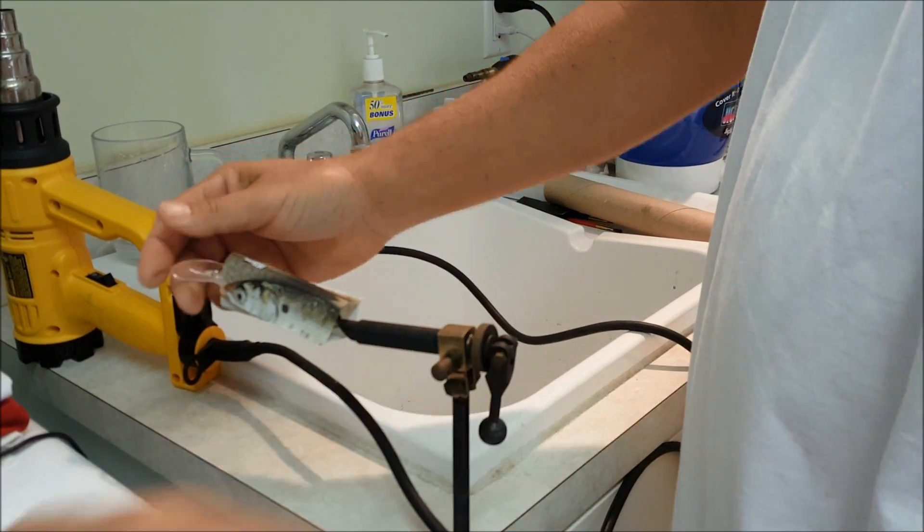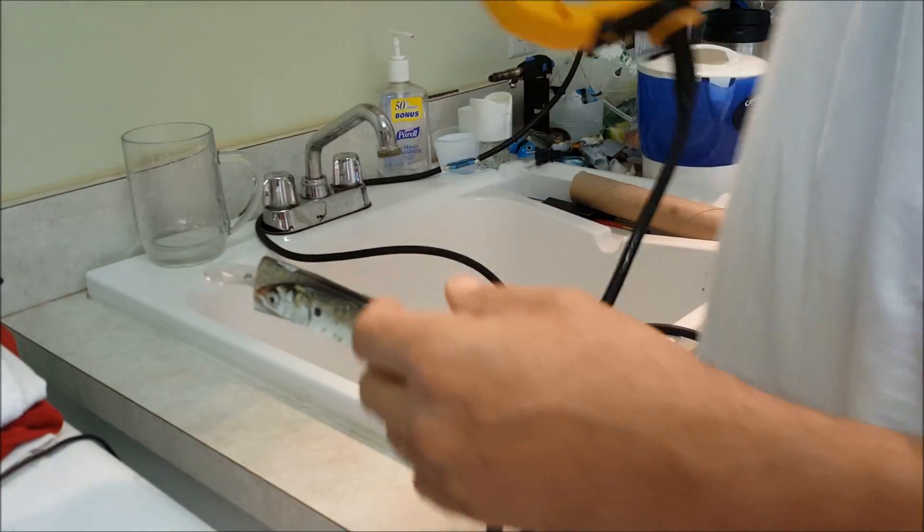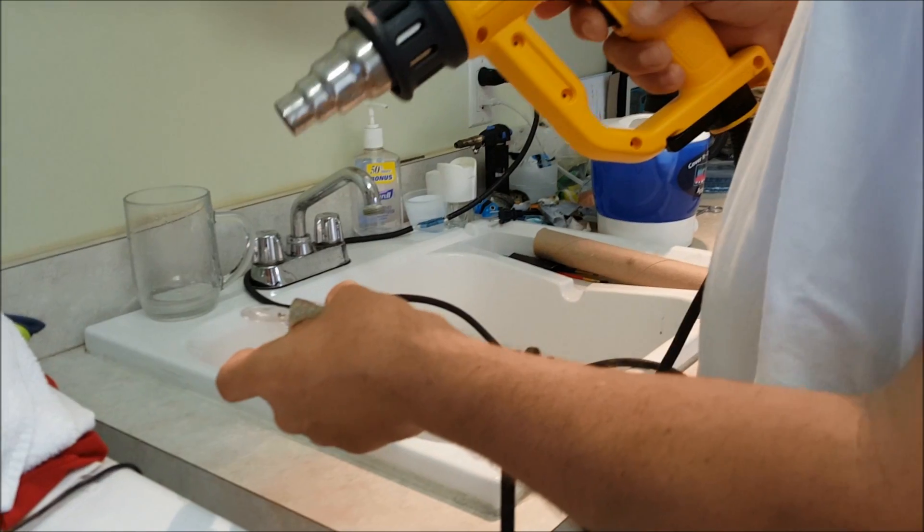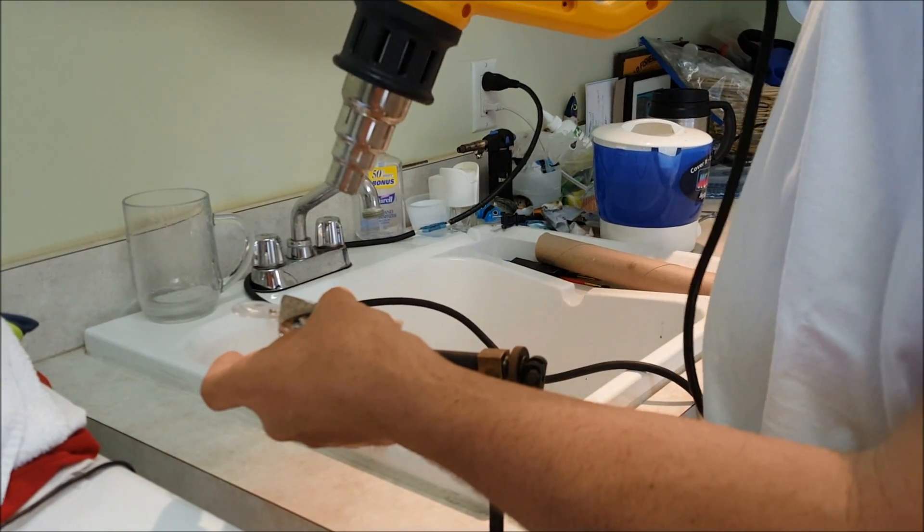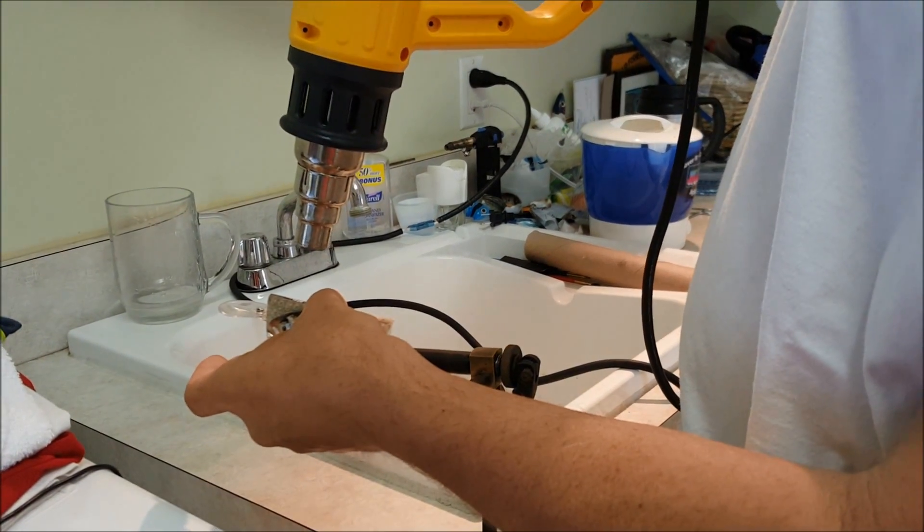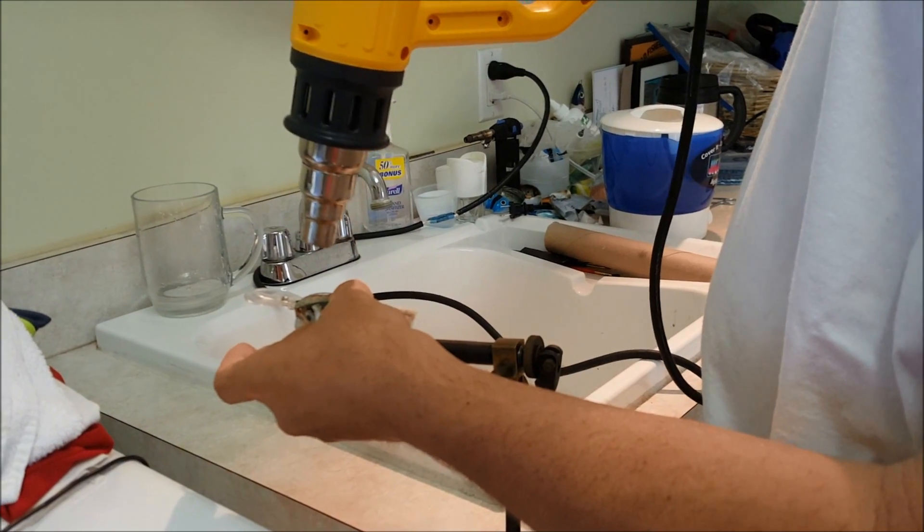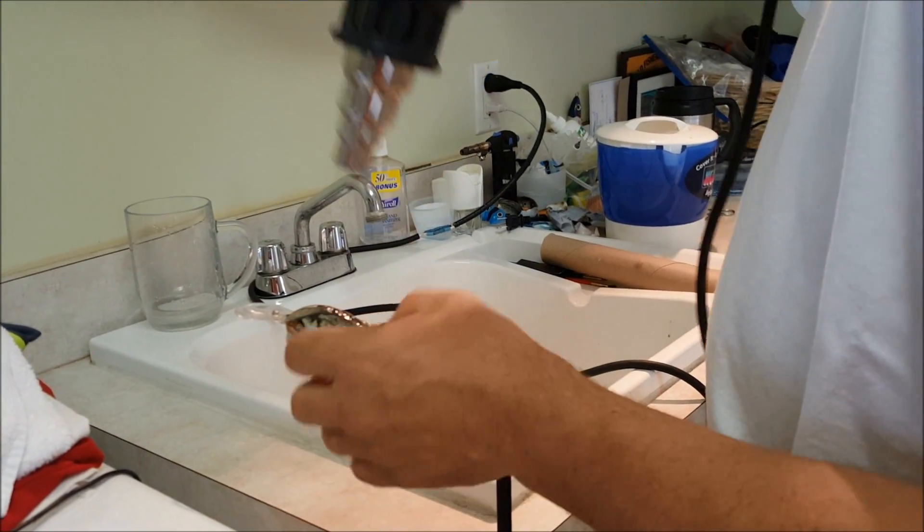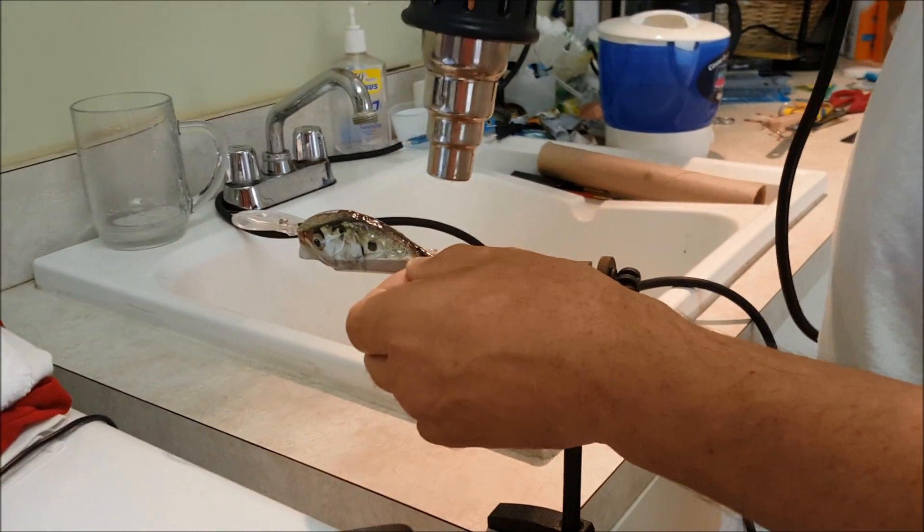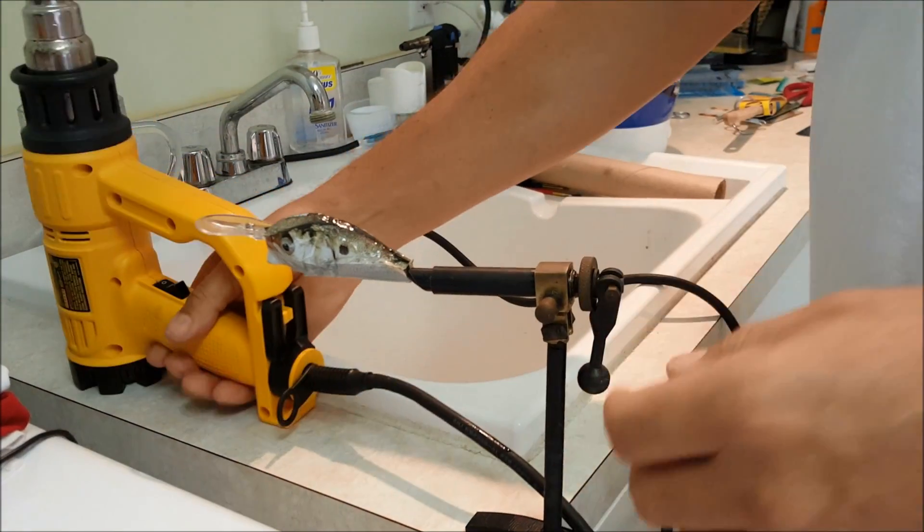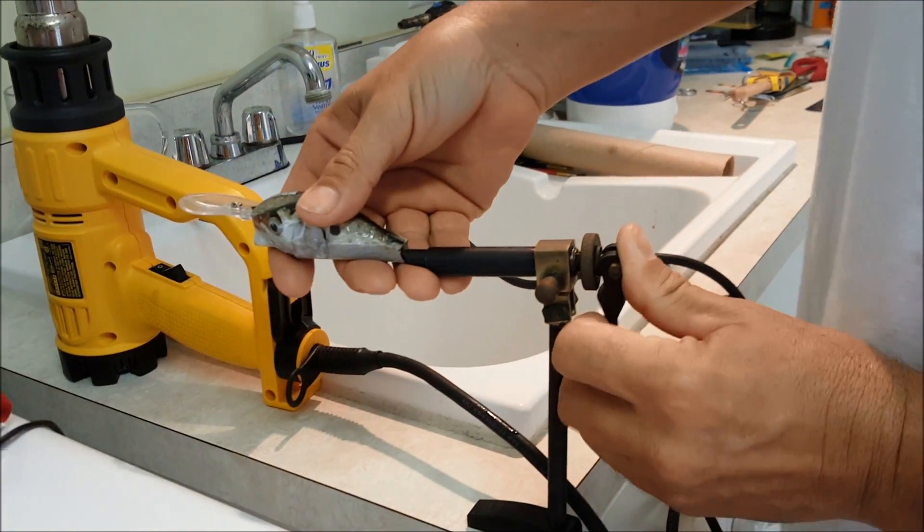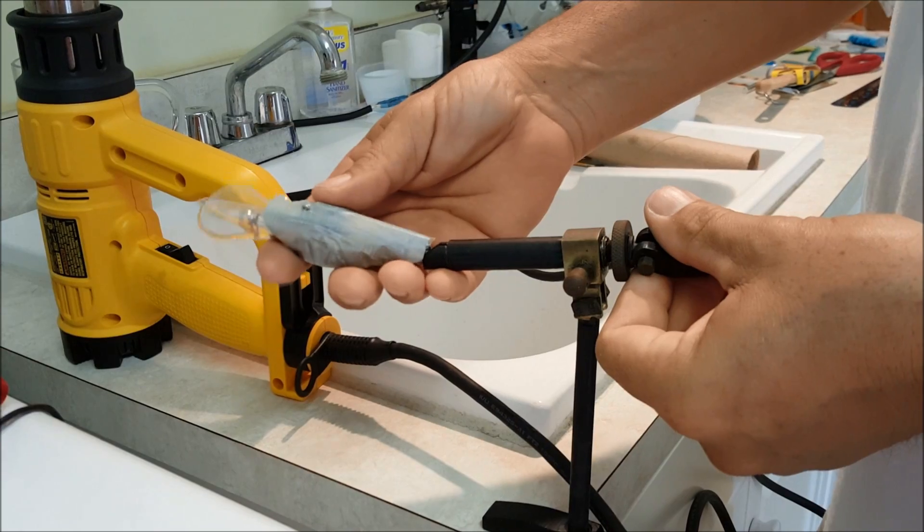So what I'm going to use today is a variable heat gun which lets me shrink this sort of void space up front. Some of the back of the lure, holding it in the vise, lets me give me an extra set of hands here.